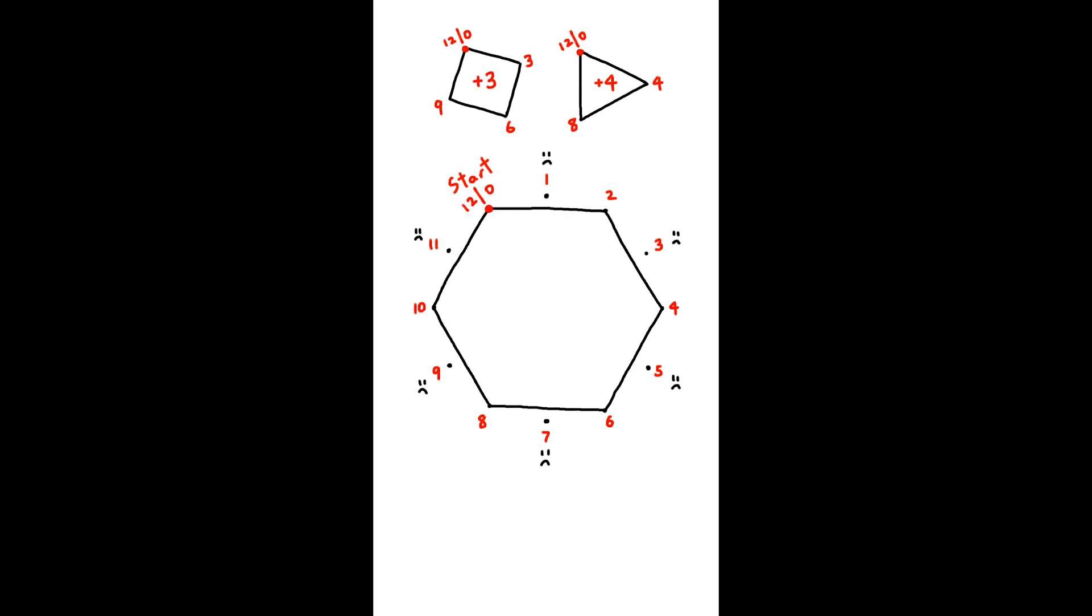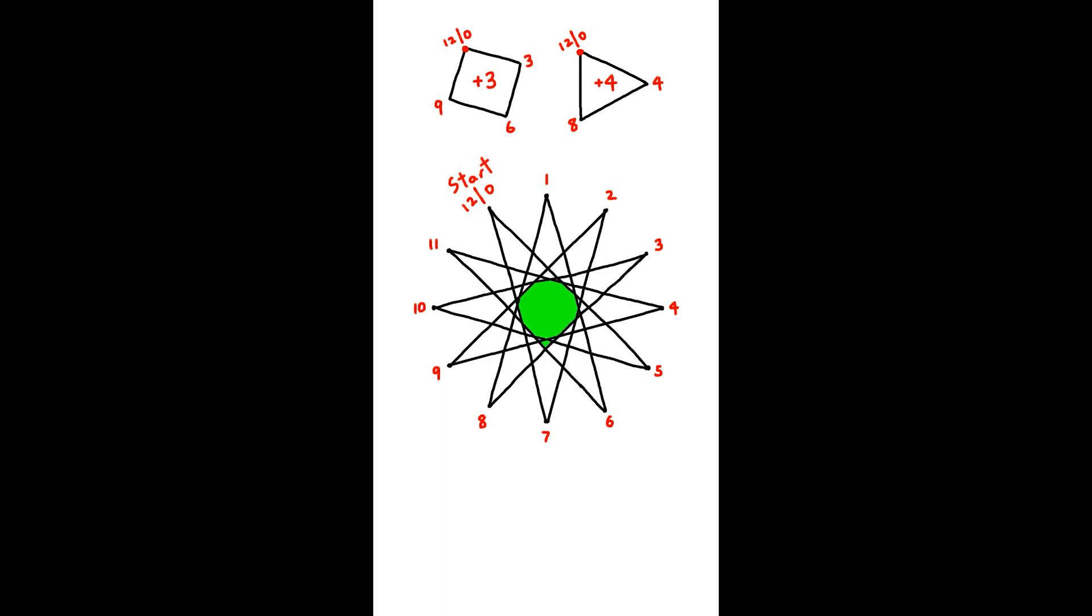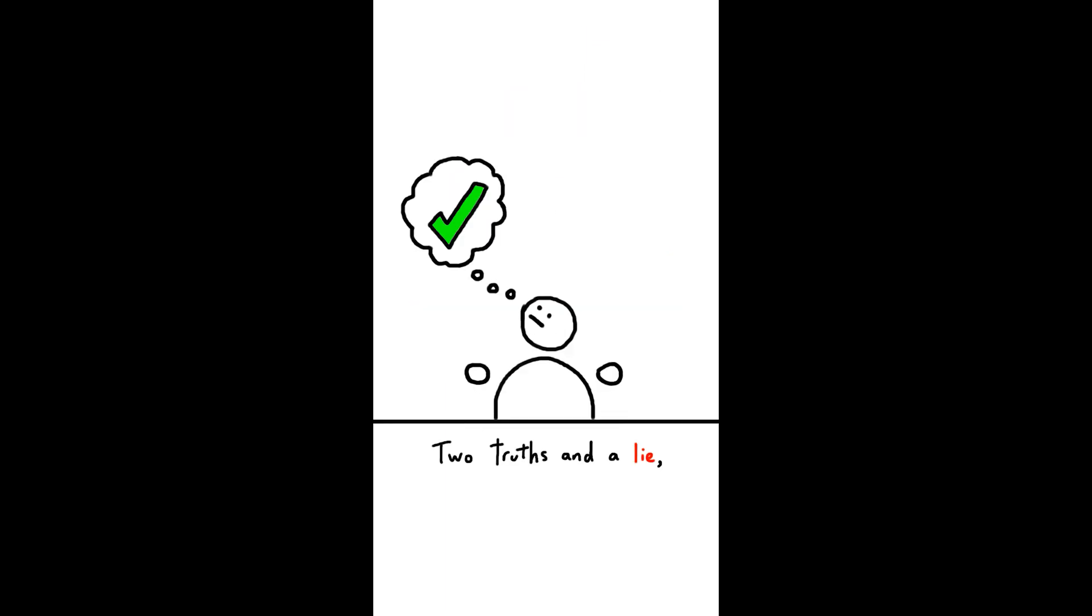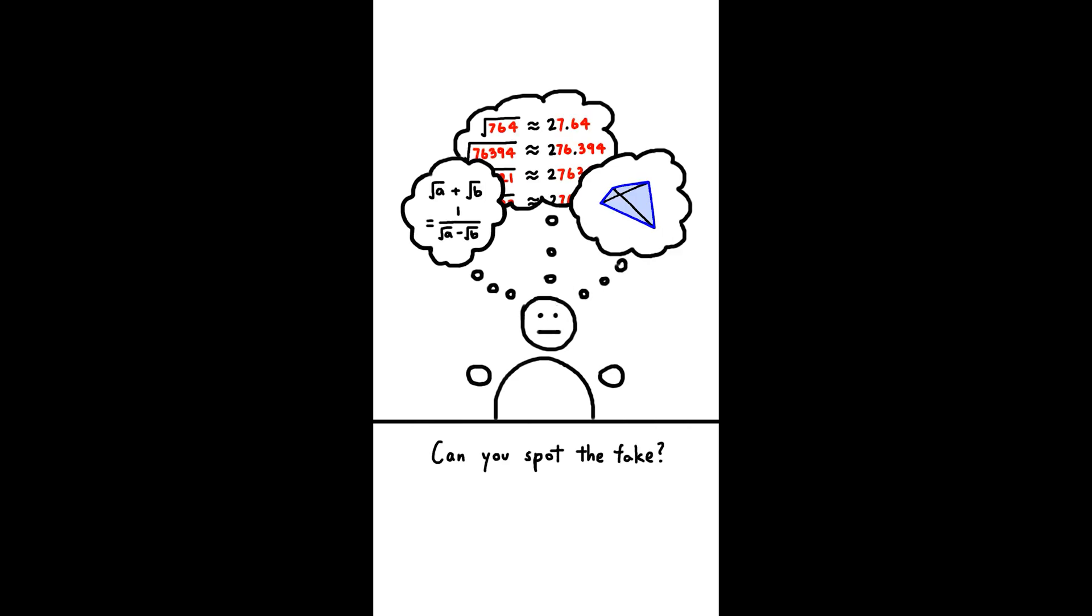Same thing happens with adding three or four. We can see why by renaming this vertex to twelve. Since twelve is divisible by two, three, and four, we return to the beginning before we can get to every vertex. But twelve isn't divisible by five, and we see that five works, and we get a twelve-pointed star. Two truths and a lie, but with math, can you spot the fake?